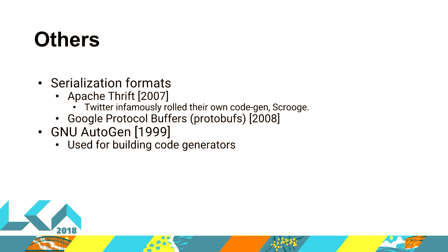Serialization formats have their own code generators as well. Apache Thrift — Twitter made their own code generator for this because they didn't like Apache's one; it worked with Scala but was really just a Java thing they were expecting to pull across. That's a recurring theme in this talk — I'll get more on Scala in a moment. There's also Google Protocol Buffers, which has been around internally at Google since the early 2000s but was released publicly in 2008. And GNU Autogen is kind of a meta code generator — you'll see that a lot in open source projects written in C or C++.